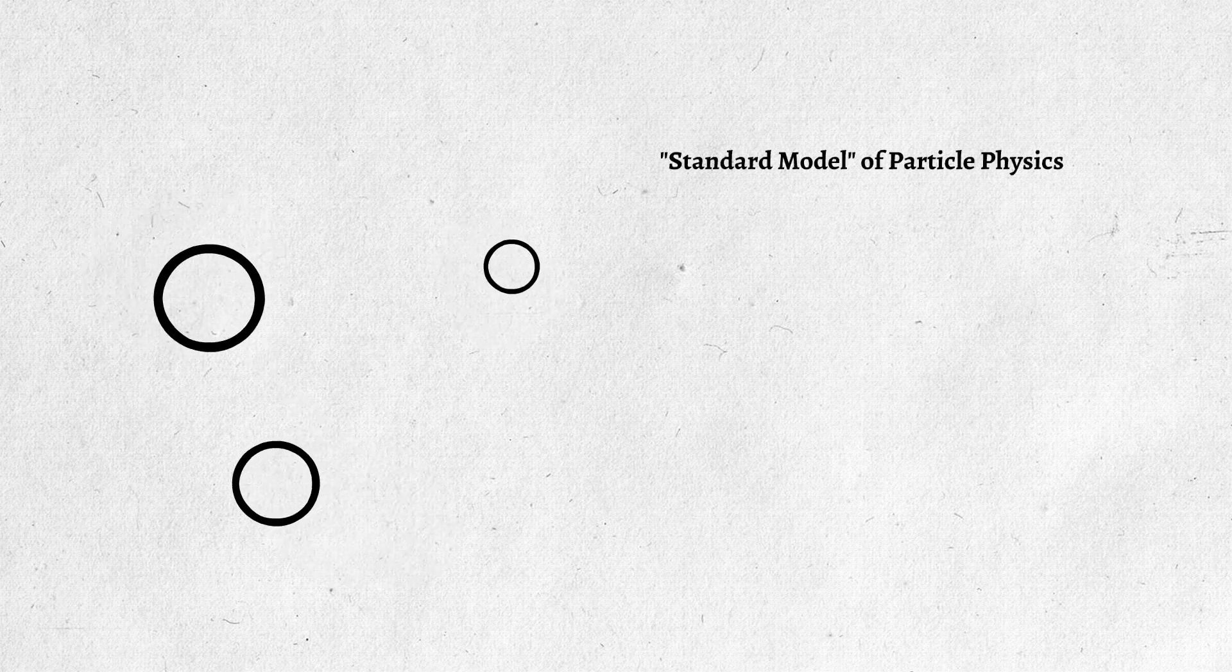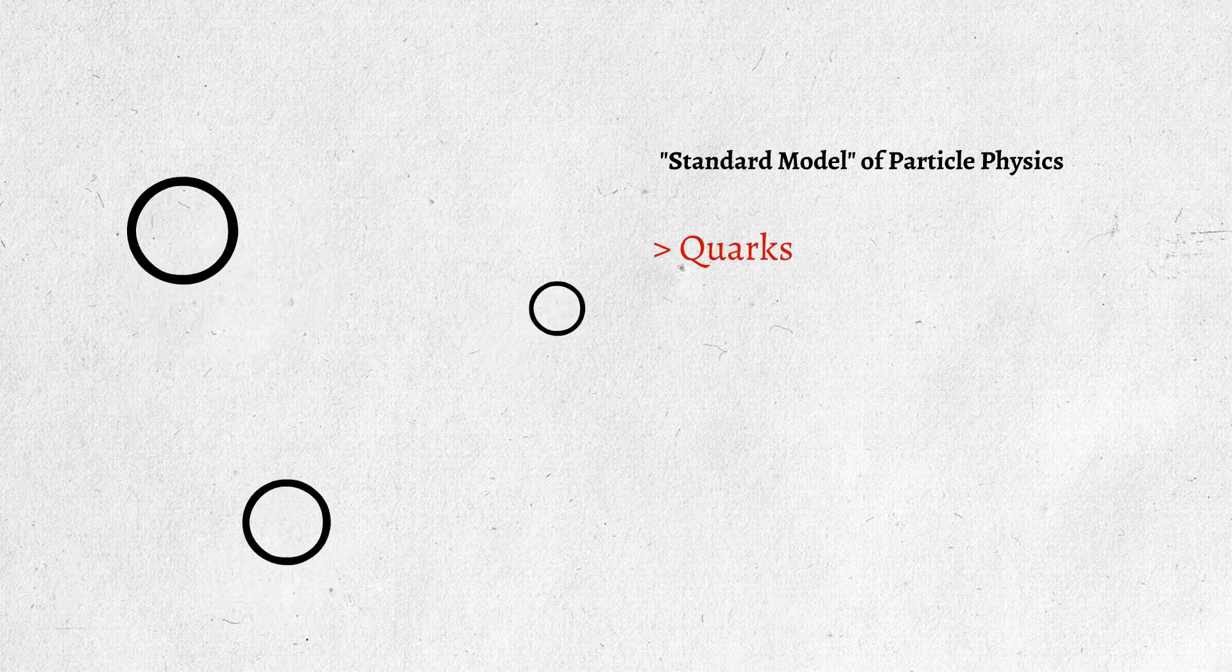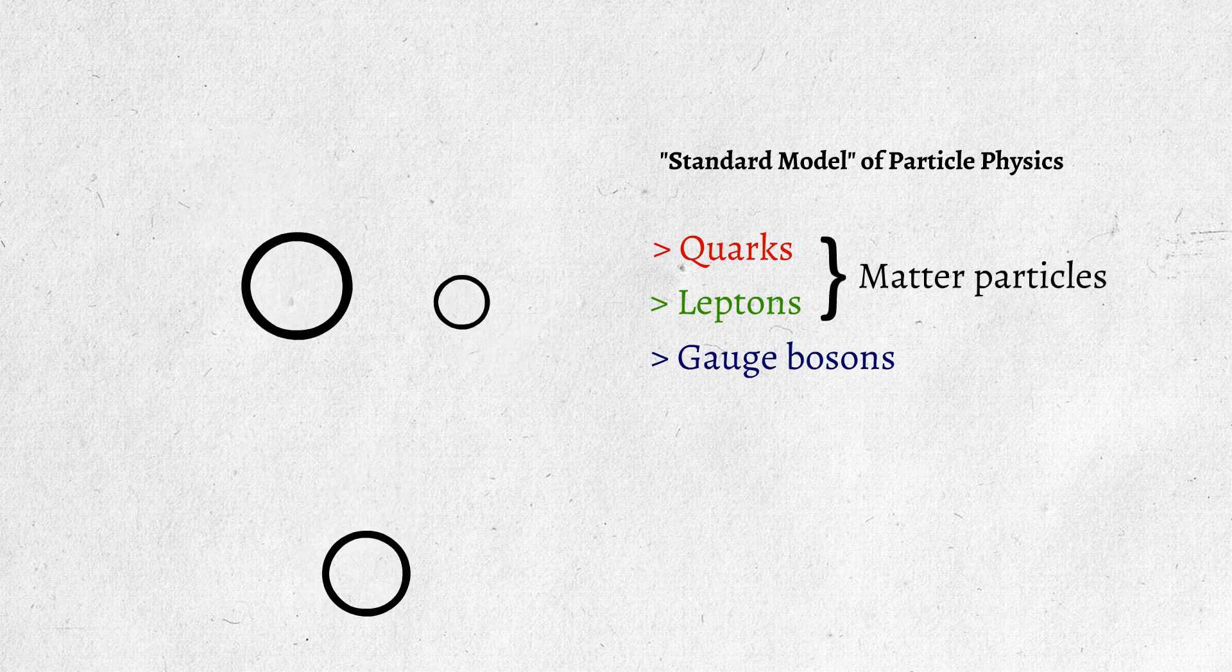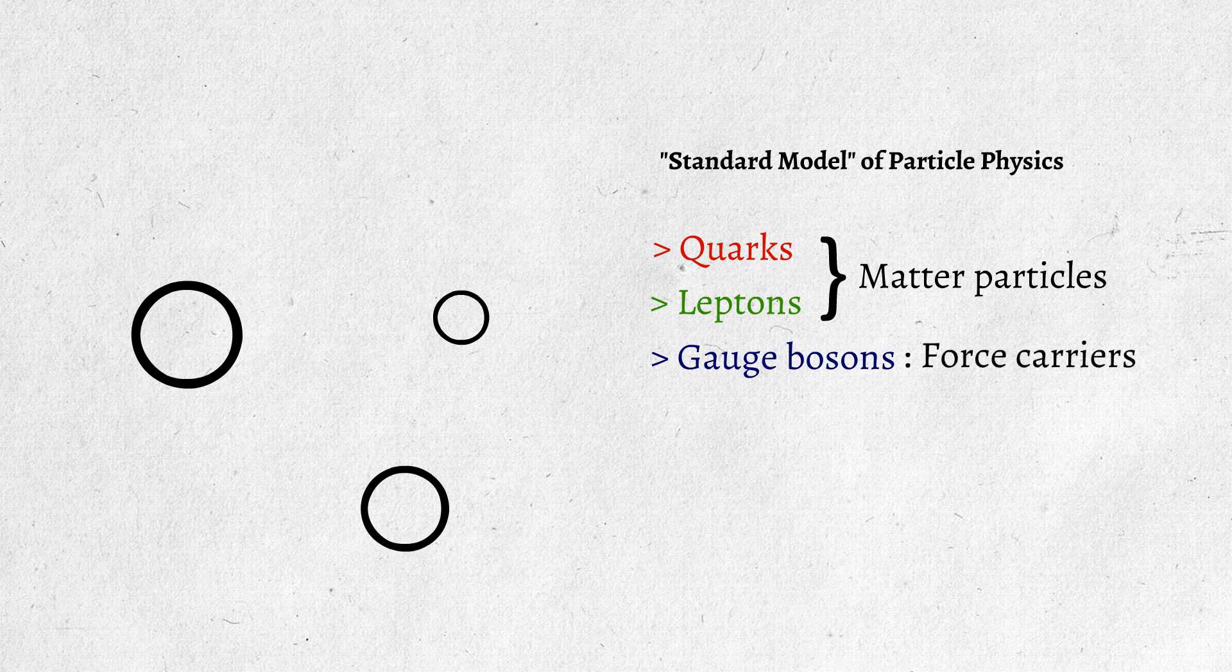The fundamental particles can be divided into three main categories: the quarks, the leptons, and the gauge bosons. The quarks and leptons are matter particles, whereas the gauge bosons are force carriers. We will explain each category separately.